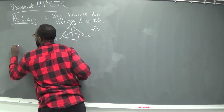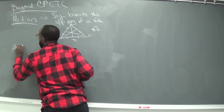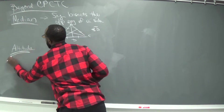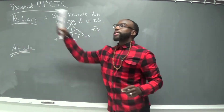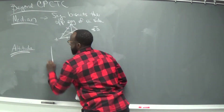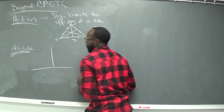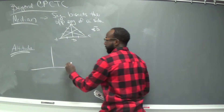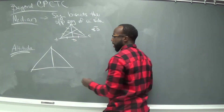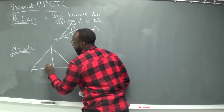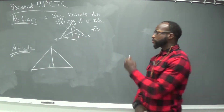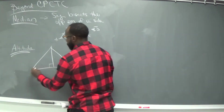The other word is called an altitude. An altitude, much like a median, creates a perpendicular line. So it comes out of the vertex and it creates a 90-degree angle. That's what altitudes do.